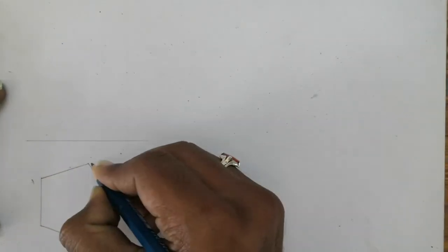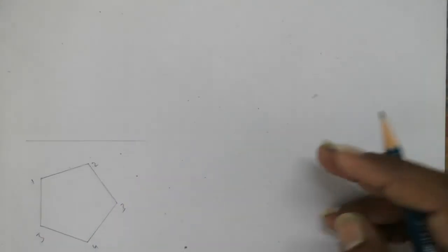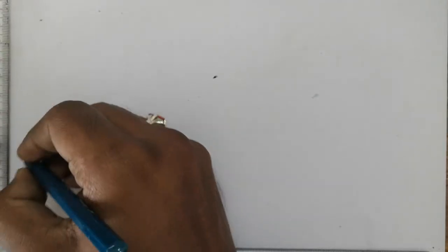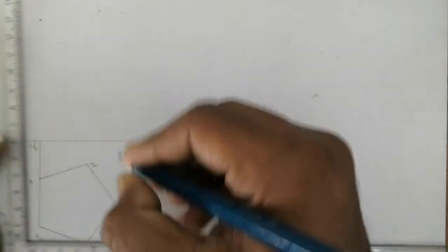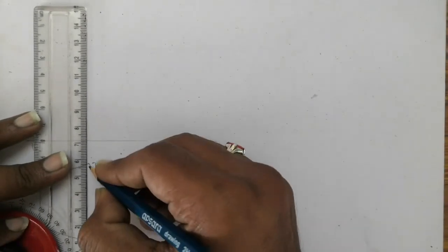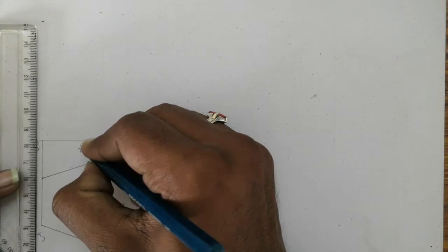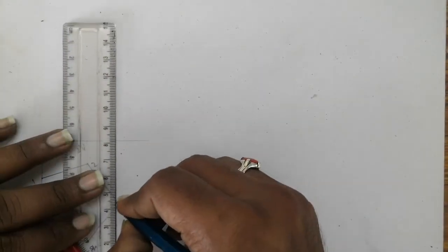Then afterwards, we will be drawing the front view from it. This is 1, 2, 3, 4 and 5. Project these points onto this XY line. So these two points will be coming here itself. This is 1 dash and 5 dash, and 2 dash and 4 dash. This is 3 dash.